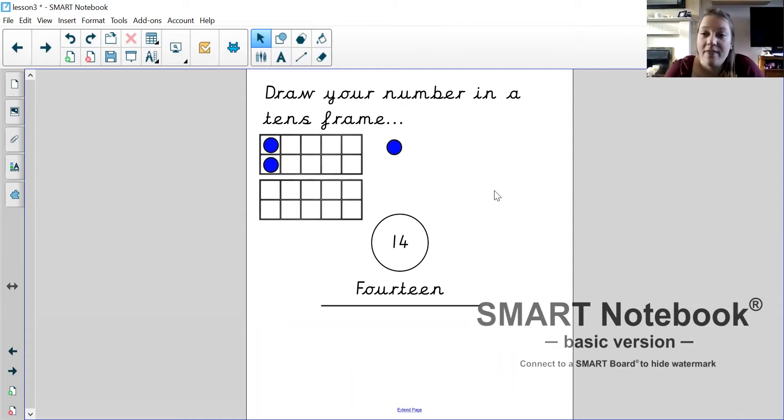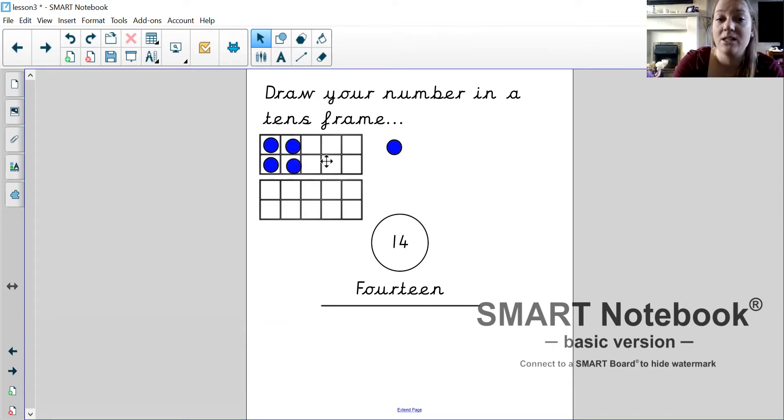Once you've done that—remember you can pause me—you're going to show me your number. So I've got some little blue circles. You don't need to color them in, it's fine. You can do a dot or a circle, whatever is easier for you. But can you show me your number on your tens frame please? So I am going to fill mine with 14 circles. Yours will be different because we're not all doing the same number.